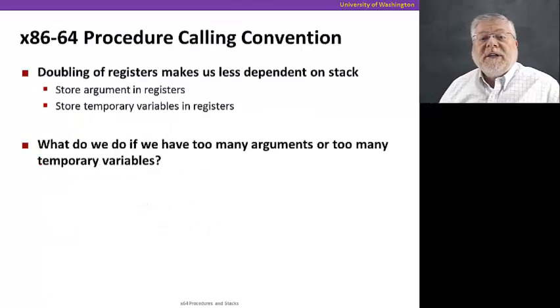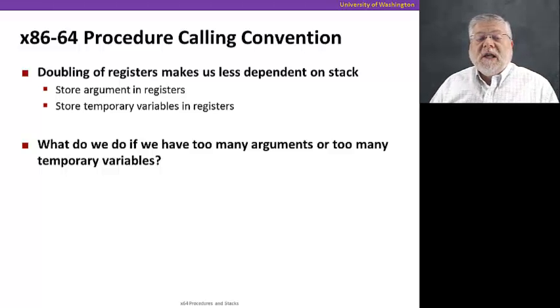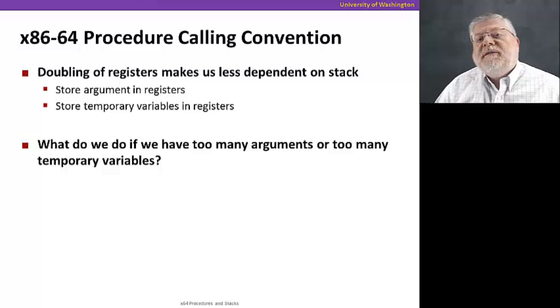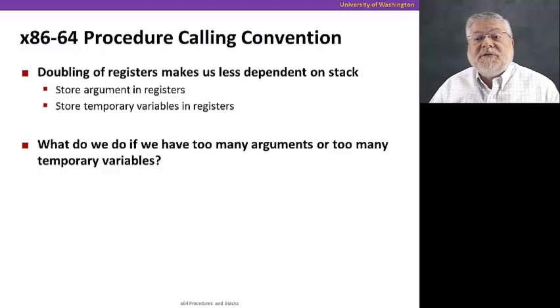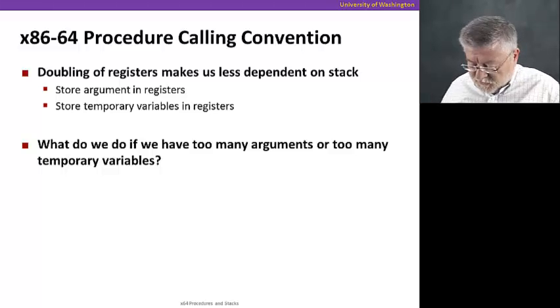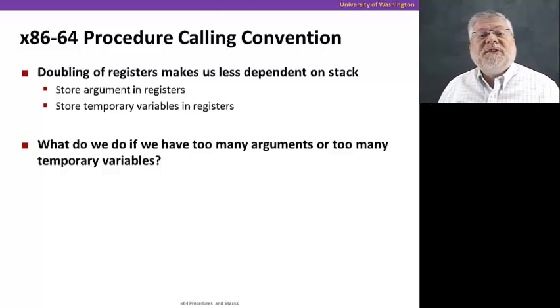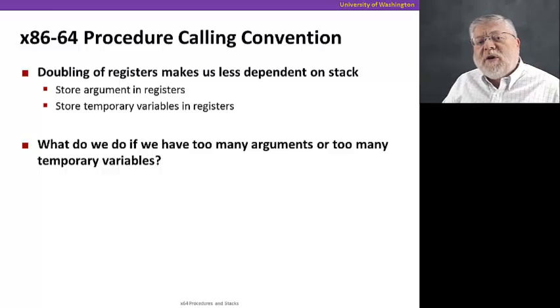The calling convention in x86 64-bit architectures is a little different because of the doubling of the number of general purpose registers. There are so many more registers available on the 64-bit architectures that we can decrease our use of the stack and make better use of the registers. We're going to store arguments in registers and temporary variables in registers. We could always run out of registers and fall back to the way we did things in the 32-bit architectures, but for the most part we're going to try to make use of those registers as best we can and avoid the use of memory.